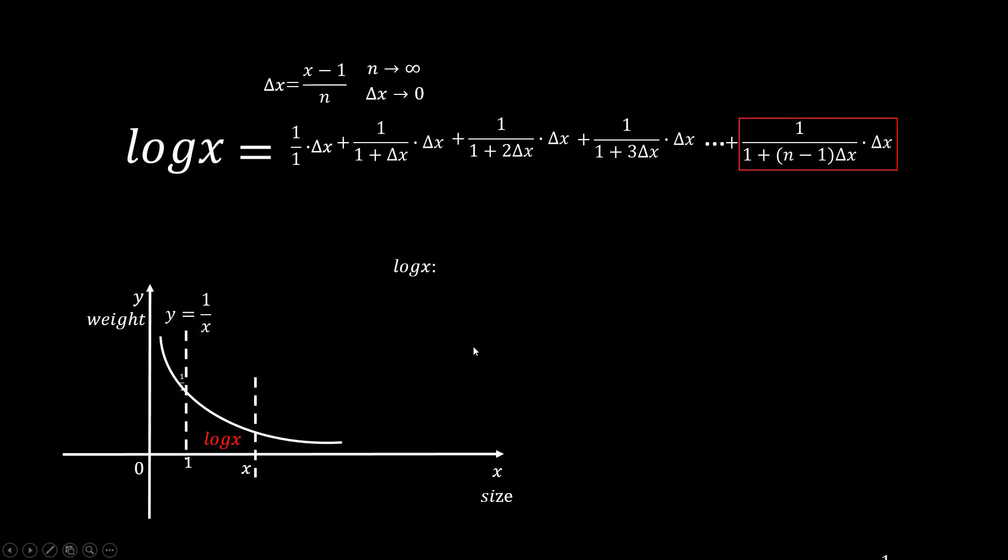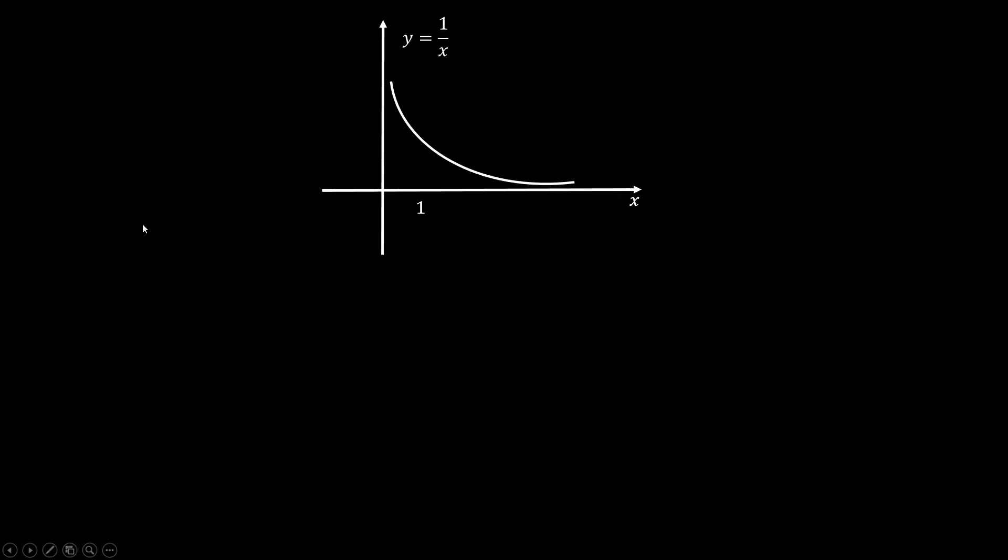Now we can interpret log in terms of geometry. If X is greater than 1, it's the area under the curve from 1 to X. If X is smaller than 1, so that it's a decay problem, the rate is the negative of the area under the curve from X to 1. Viewing log as area allows us to see relationships in an easier way.